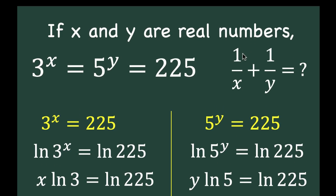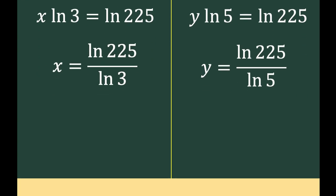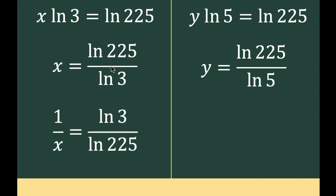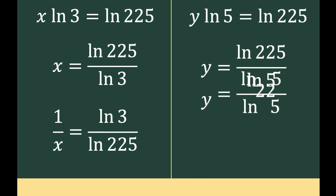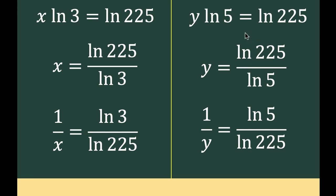Notice that we are looking for 1 over x plus 1 over y. So we can take the reciprocal of x, giving 1 over x equals ln of 3 over ln of 225. We also take the reciprocal of y, giving 1 over y equals ln of 5 over ln of 225.